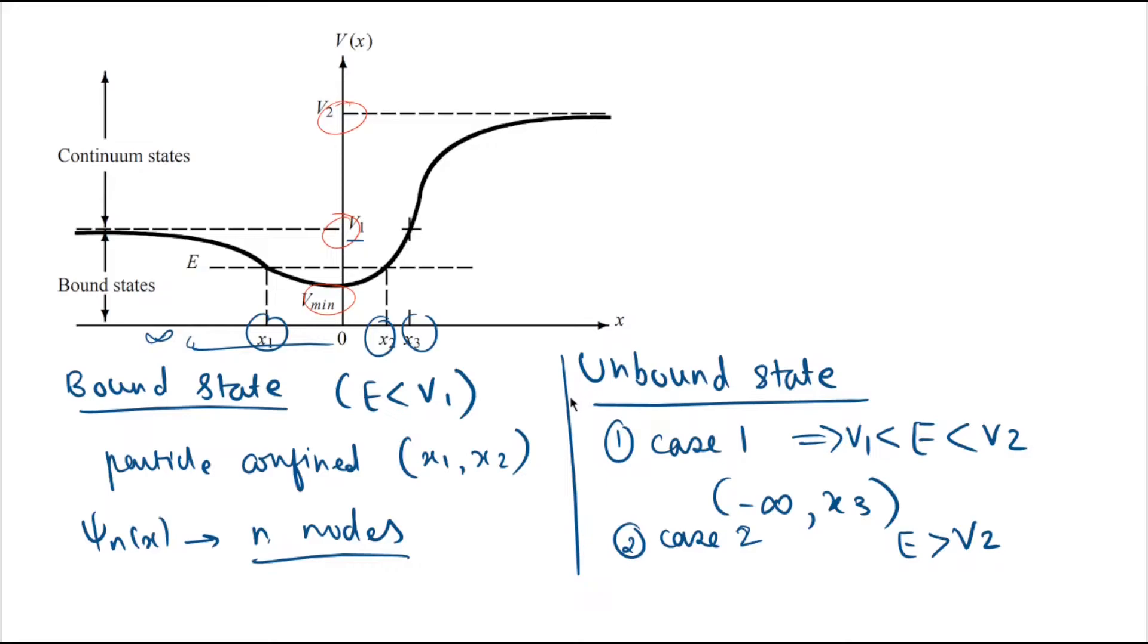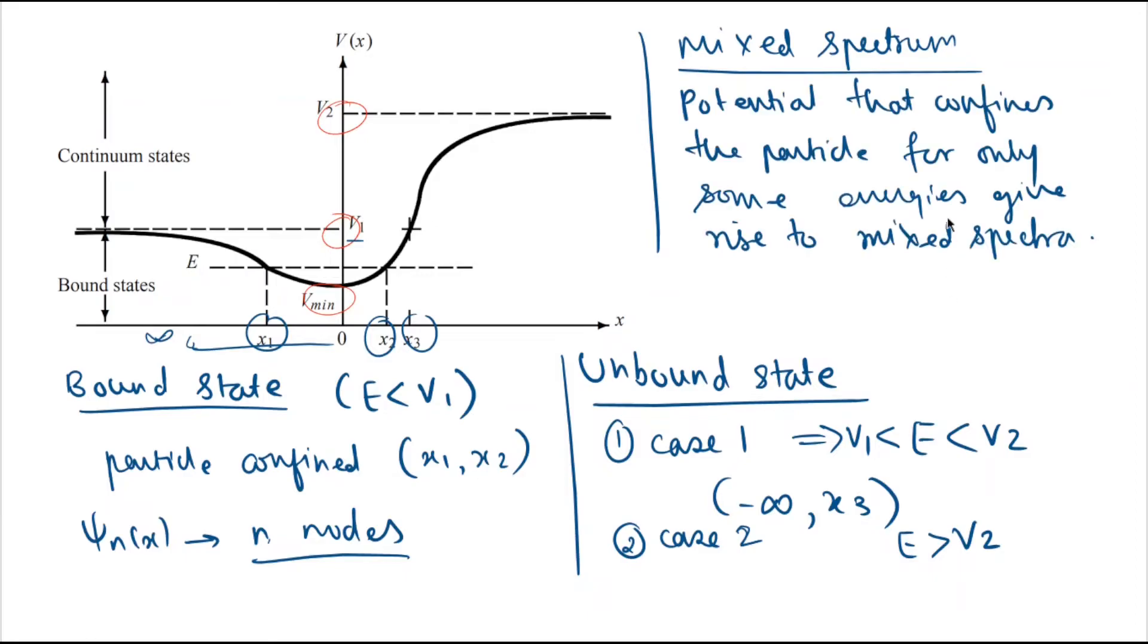For bound states, we saw that the energy spectrums were discrete, and for unbound states, the energy spectrums were continuous. Now let's see what are mixed energy spectra—for example, finite square well potential and Coulomb or molecular potentials.